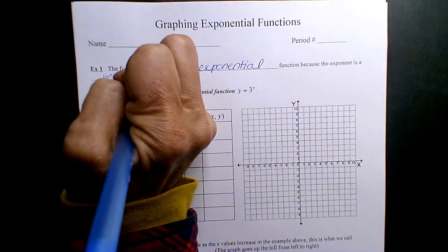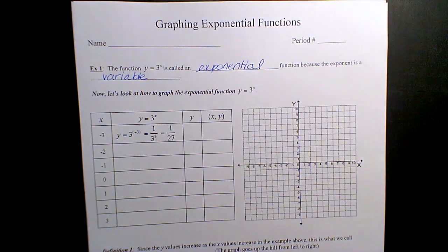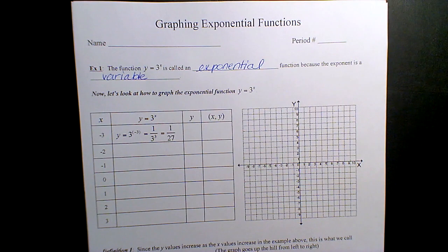It could be x or r or y or t or a - any letter, but it's a variable, not solely a number. You can have an exponent that's 3x or x over 2 or x minus 5, but the point is there's a variable in the exponent and that makes it exponential.